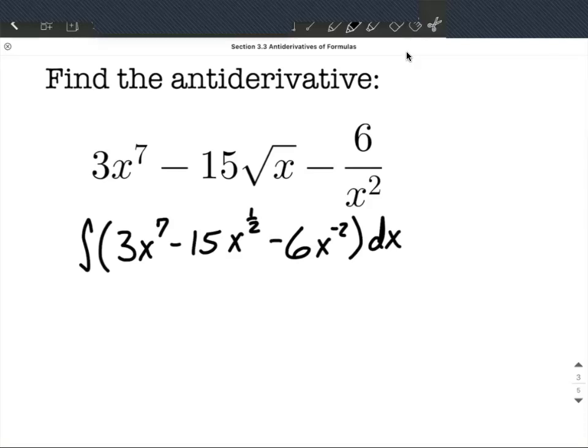Alright, so from here let's actually find the antiderivative. So the 3 is going to come along. We're going to increase the exponent by 1, so 7 plus 1 makes 8. Then we divide by that new exponent.